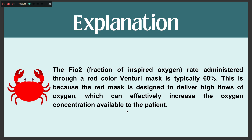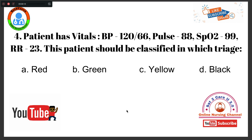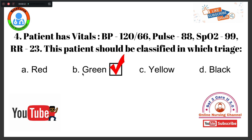Question number 4: A patient has vitals — blood pressure of 120/66 mmHg, pulse 88 beats per minute, SpO2 99%, and respiratory rate of 23. Which triage category should this patient be classified in? Option A, red. Option B, green. Option C, yellow. Option D, black. With these parameters, the right answer is Option B, green. All these parameters look normal, so the green color triage category applies to this patient.